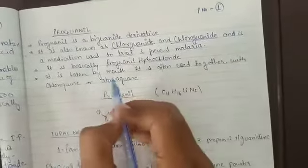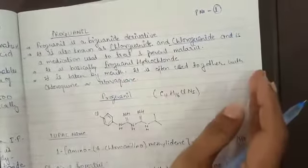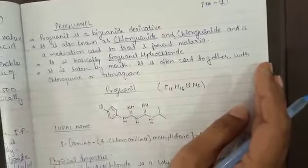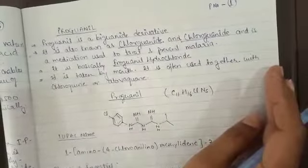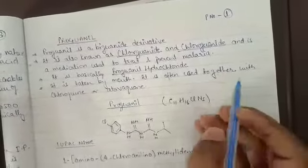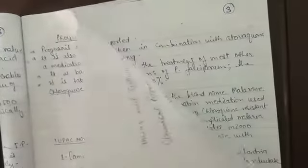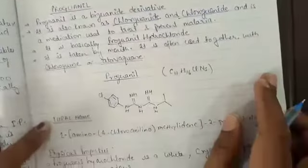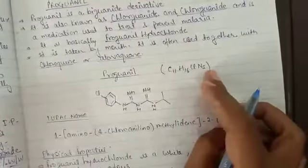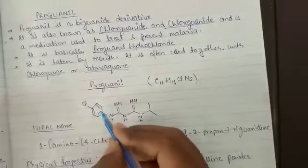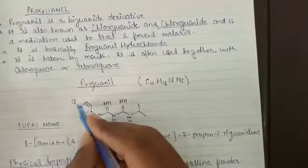It is taken by mouth. It is often used together with chloroquine or atovaquone. The structure has a benzene ring with a chloro group attached and a methylene group attached.